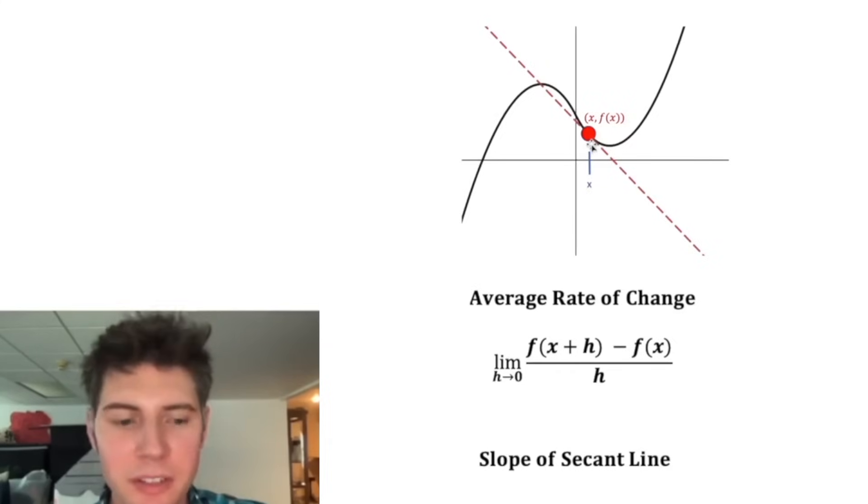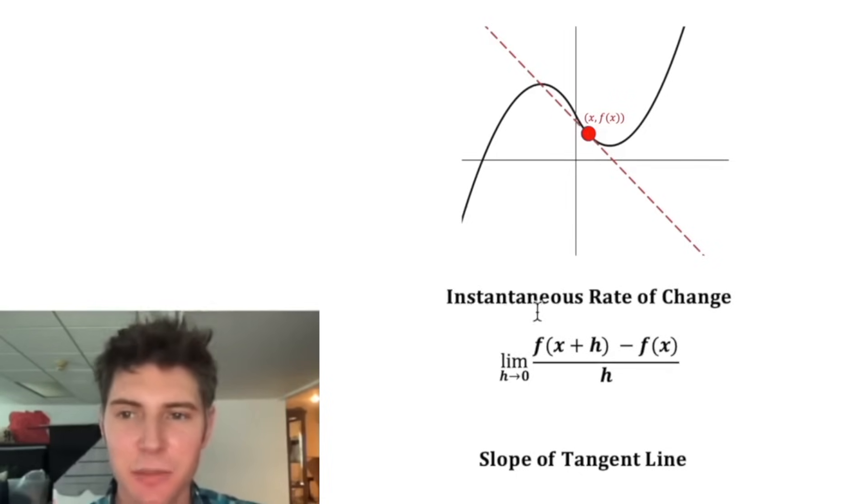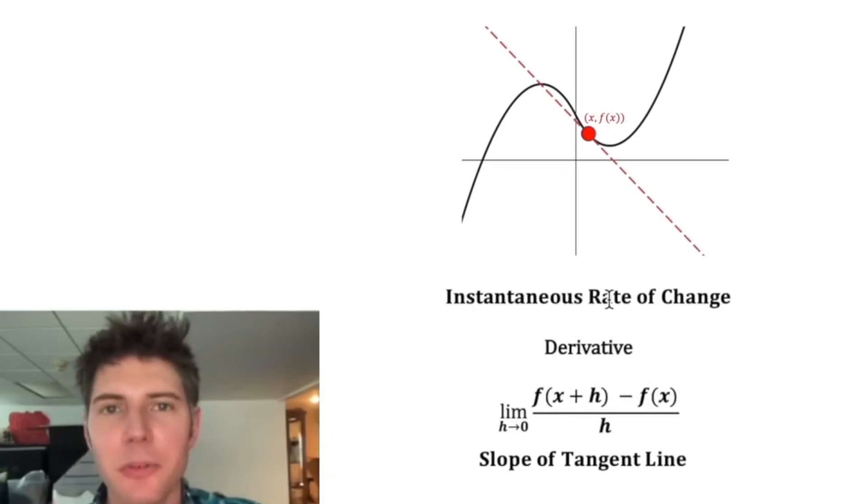And now that we're here at h equals zero, that means there's only one point. This line is no longer called a secant line. It's called a tangent line. And this point is called the point of tangency. So this is no longer an average rate of change because there's no two points for it to be an average for. This is an instantaneous rate of change. It's how fast it's changing at that instant. Another name we have for this is the derivative.